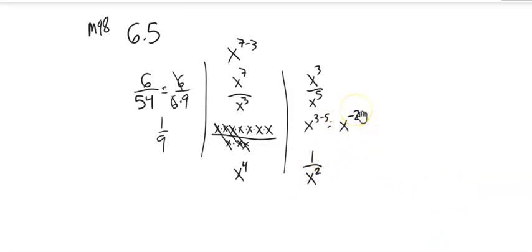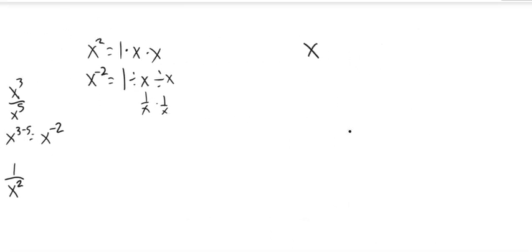A negative exponent is repeated division. For example, x squared means repeated multiplication. I'm going to start with 1, multiply by x, multiply by x. x to the negative 2 means repeated division, so divide by x, divide by x, which is the same as multiply by 1 over x, multiply by 1 over x. That gives us a little relationship: if I have anything taken to the negative exponent, it is 1 over that thing to that exponent.